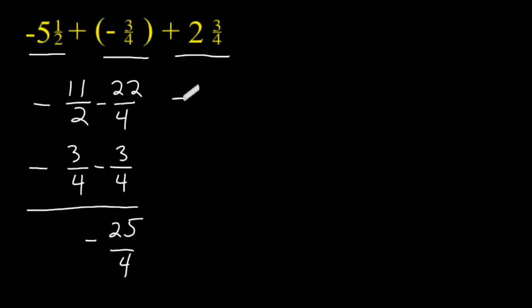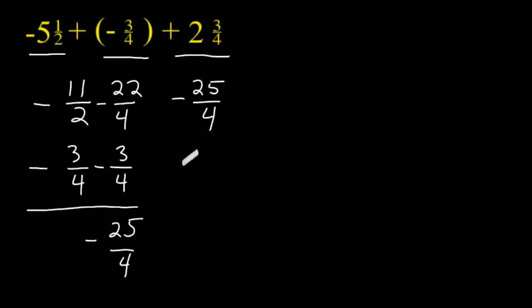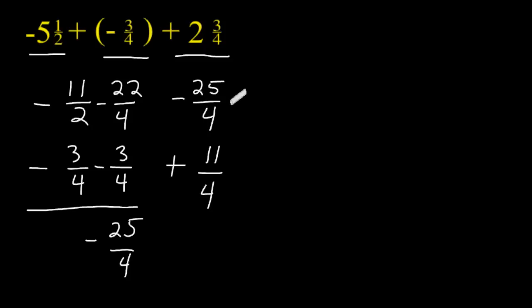Now we have to take negative 25 quarters and add that to 2 and 3 quarters. Let's express positive 2 and 3 quarters as an improper fraction — that would be expressed as positive 11 quarters. Because these two terms have different signs, we have to find the difference between these two fractions.